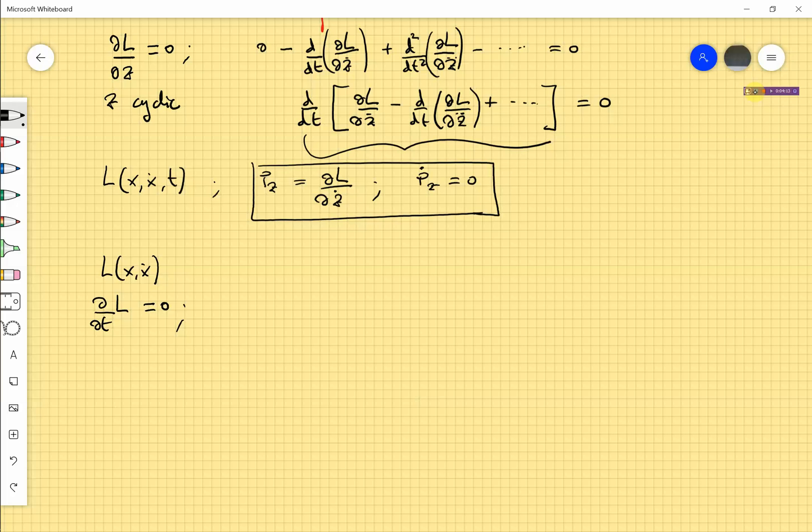In that case, one can define a quantity H this way, x dot partial L partial x dot minus L, which is called the Hamiltonian, which will be called the energy of the system.